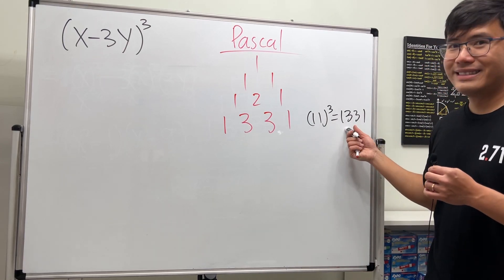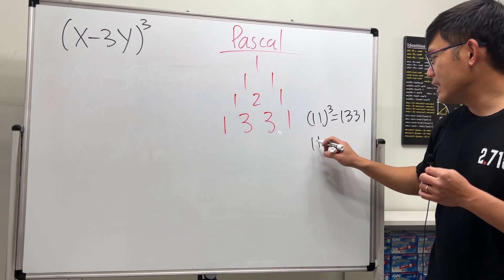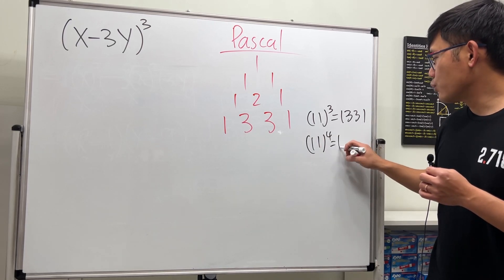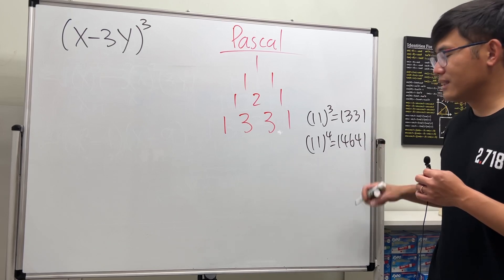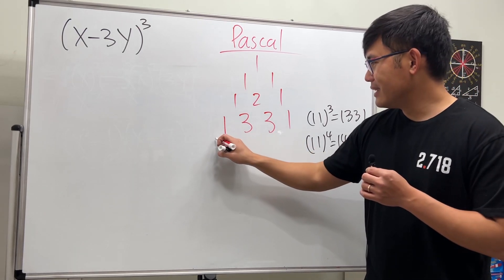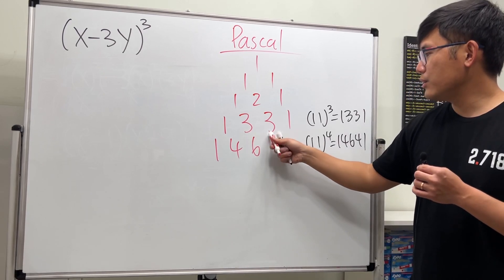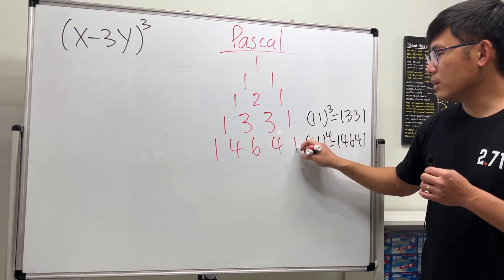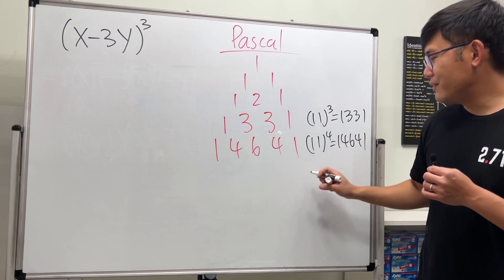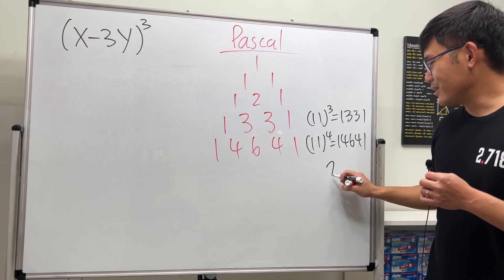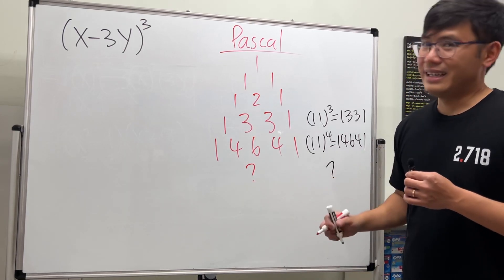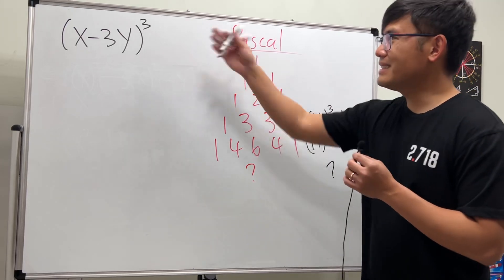It works the same for the next one. 11 to the fourth power, this right here is one four six four one. Let's have a look. One, and then you add these two together, you add these two together, and you add them together, and you have the one. I'm going to leave the next one for you guys to think about. But let's just go ahead and expand that first.